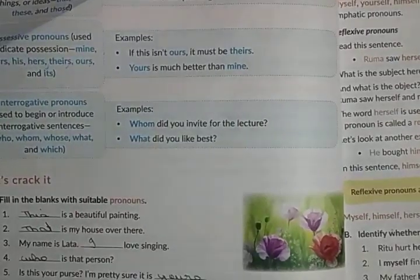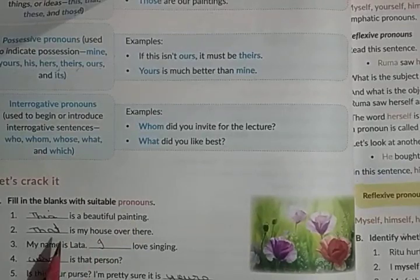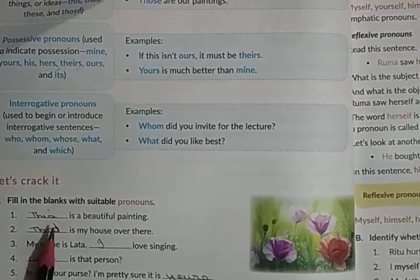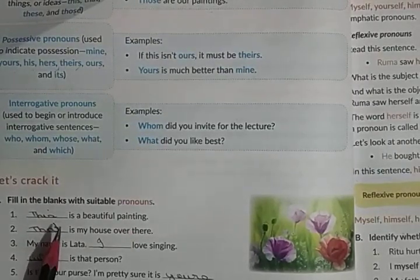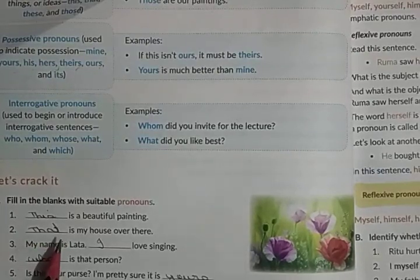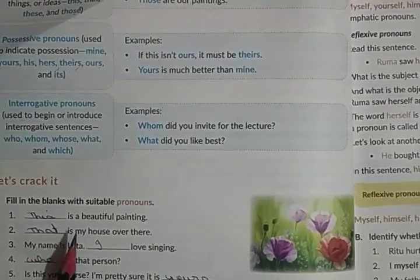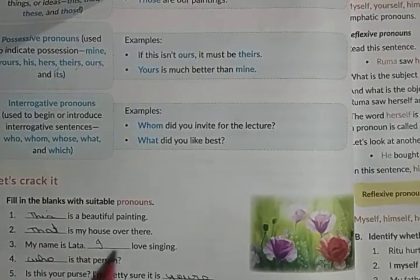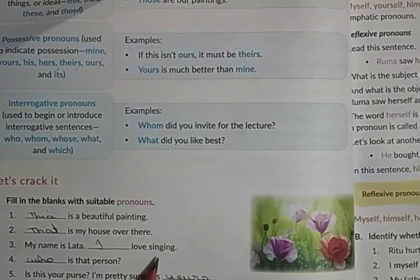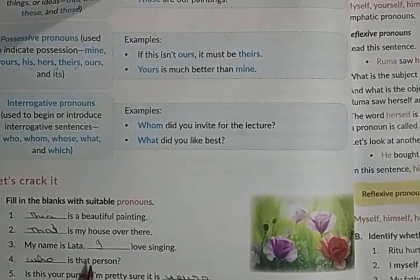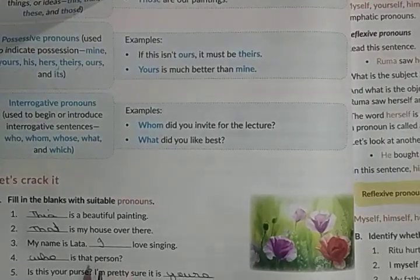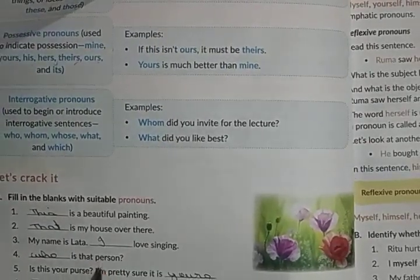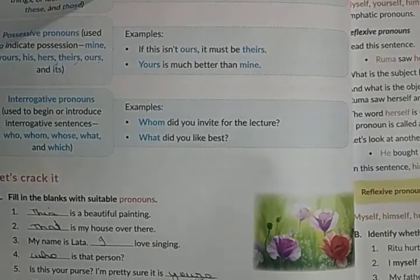Fill in the blanks with suitable pronouns. Blank is a beautiful painting — you can write 'This is a beautiful painting' or 'It is a beautiful painting.' Blank is my house over there — 'That is my house over there.' My name is Lata, blank loves singing — 'I love singing.' Blank is that person — 'Who is that person?' Is this your purse? I am pretty sure it is 'yours' — this is a possessive pronoun.